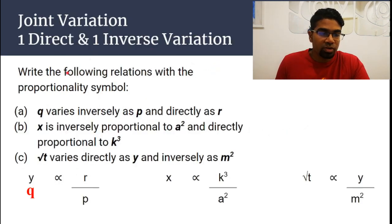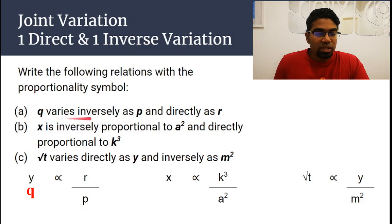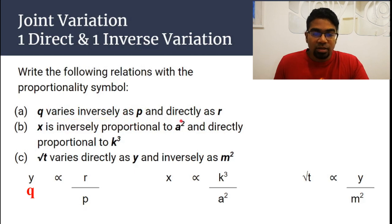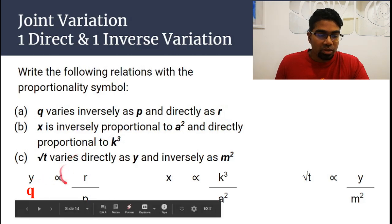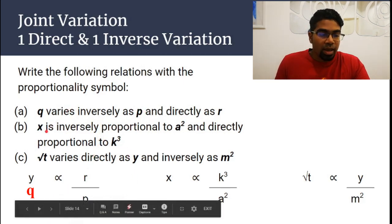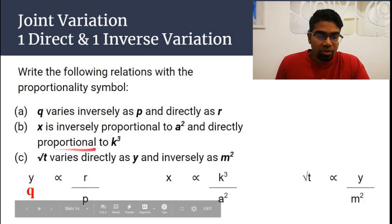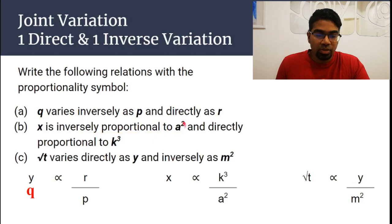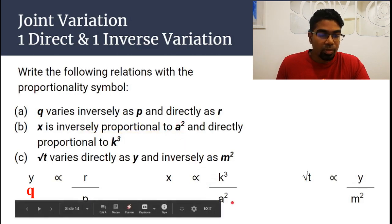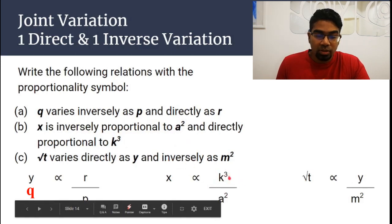So when we have a joint variation with one direct and one inverse variation, let's look at the example. Q varies inversely as P — so P goes to the denominator — and directly as R — so R goes to the numerator. We get y is proportional to R over P. Next: x is inversely proportional to a squared and directly proportional to k cubed. A squared goes to the denominator and k cubed goes to the numerator, so x is proportional to k cubed over a squared.